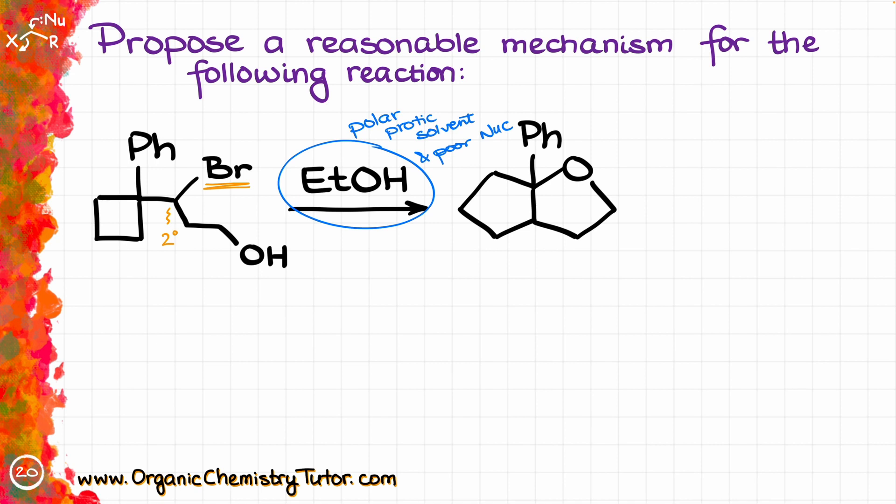Now when we know we're dealing with polar protic solution, a poor nucleophile, and a secondary alkyl halide, we can look at our predictive model and decide what type of mechanism we're looking at.